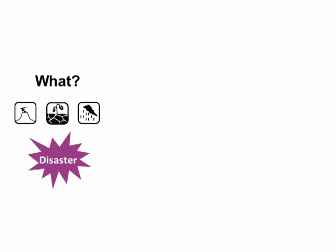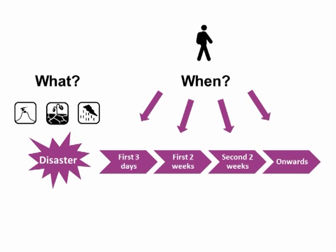First of all, you have to think about what you need to know. The answer depends on what happened and what stage after the events you are arriving to gather information. In the first days, we need to know if people are alive or dead, where they are, and if they are suffering risks that could kill more people. Until we know this, we don't really need to know details about housing, protection, food, and health. But we do need to know those things as soon as we know what the conditions of life or death are for a lot of people.